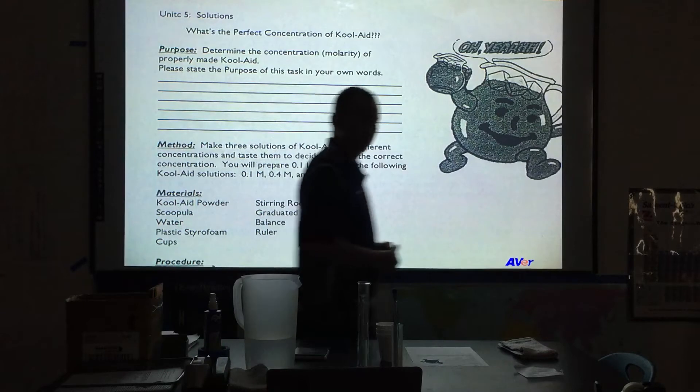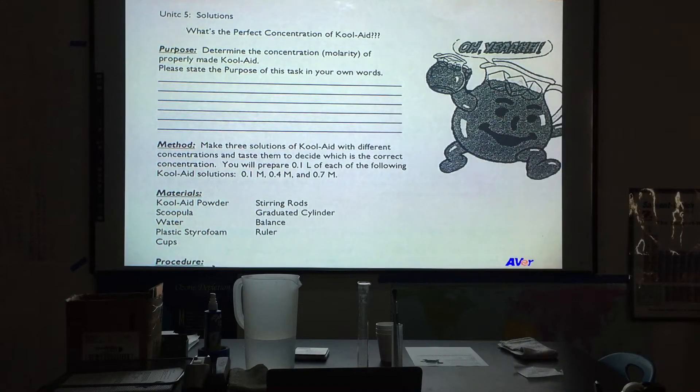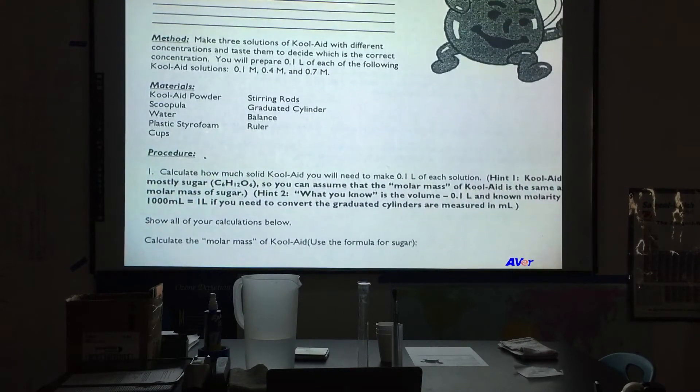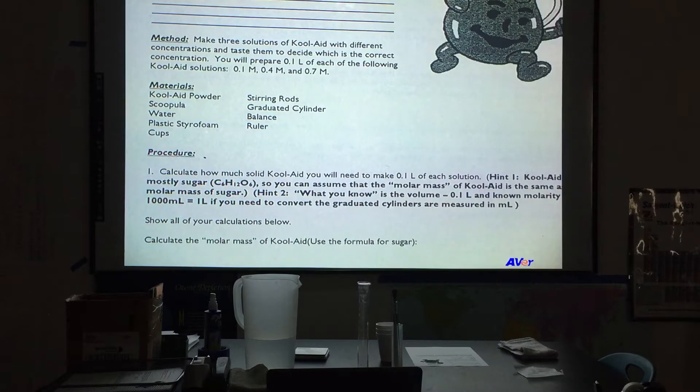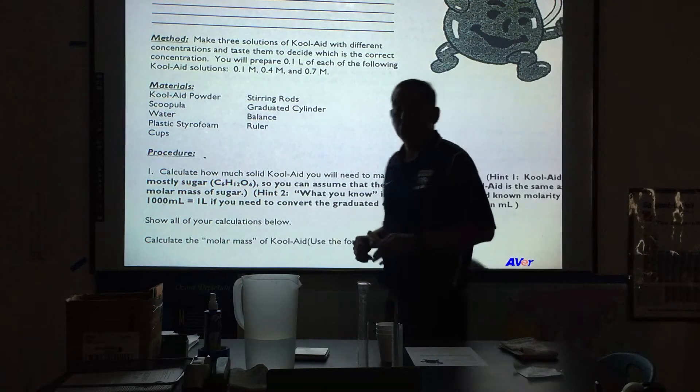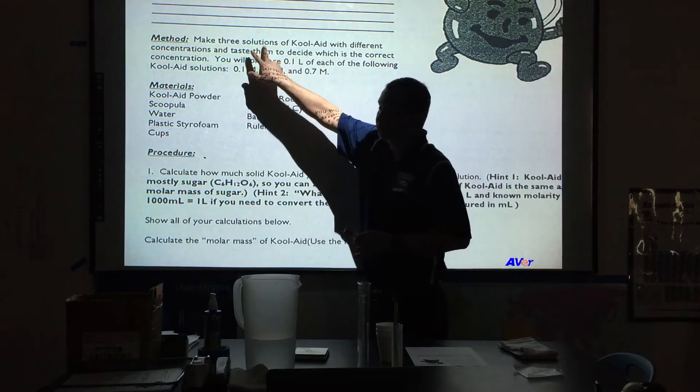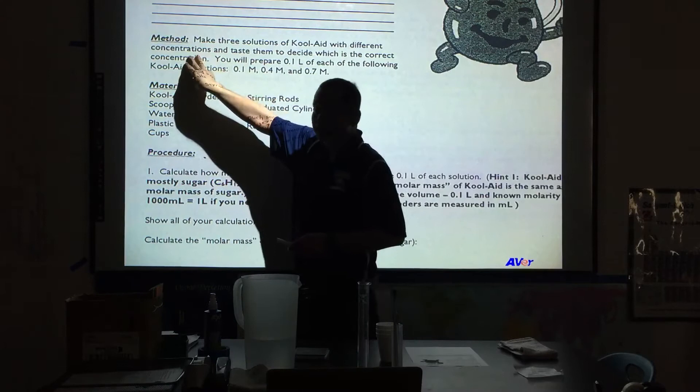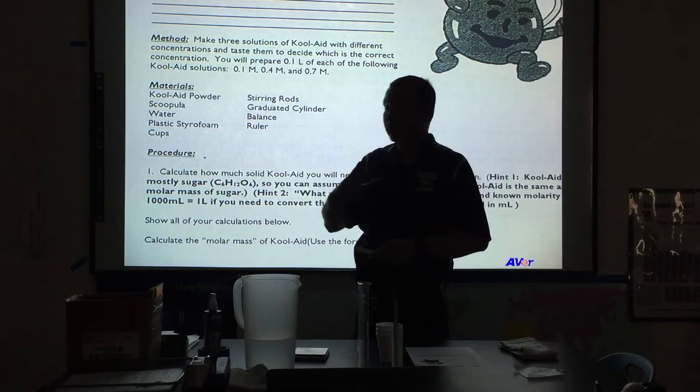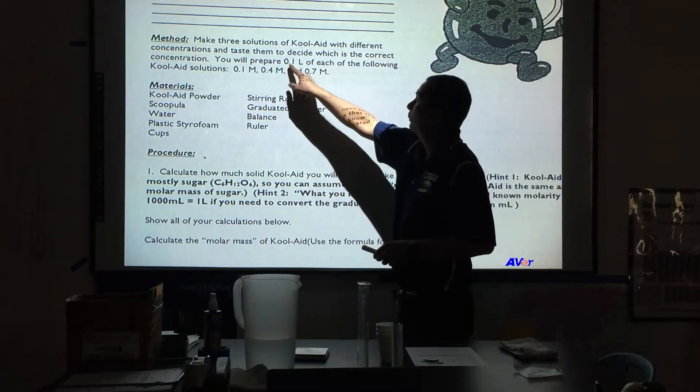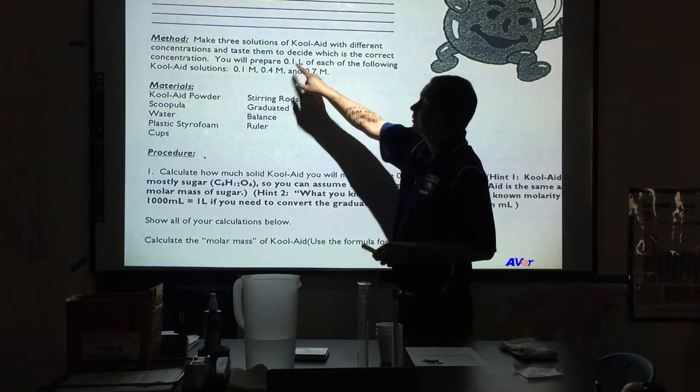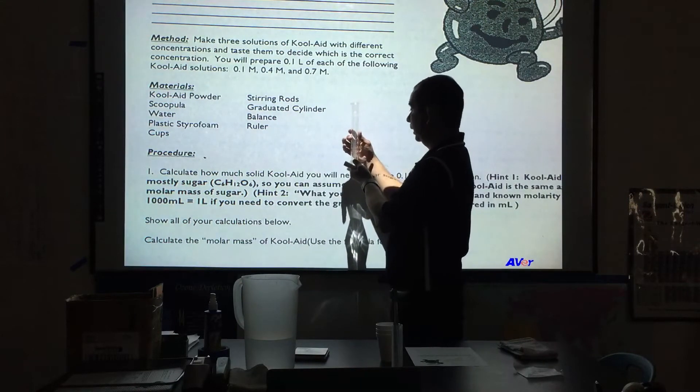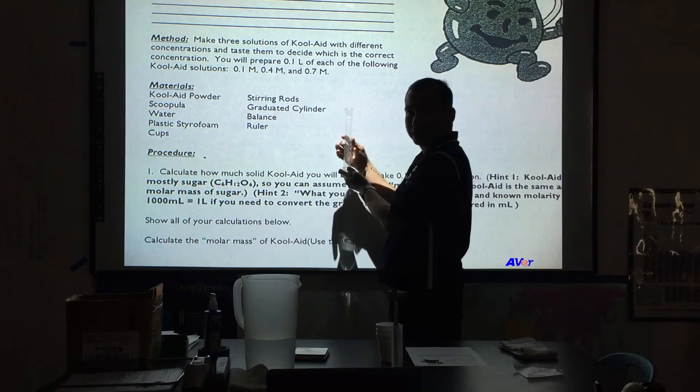Then we're going to go through the method. So in this lab what you are going to be doing is you are going to be making three different solutions of Kool-Aid. You're going to make three different concentrations and again three different molarities. You will prepare 0.1 liters of each of these solutions. 0.1 liters will be 100 milliliters as recognized on a graduated cylinder.